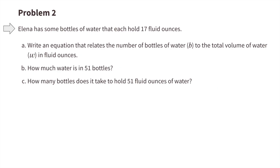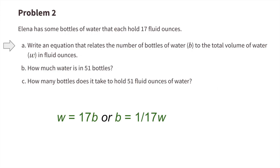Number two: Elena has some bottles of water that each holds 17 fluid ounces. Part a: write an equation that relates the number of bottles b to the total volume of water w in fluid ounces. One equation is w equals 17b. Another equation could be b equals one-seventeenth w.